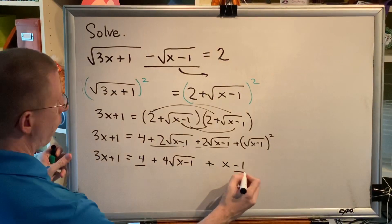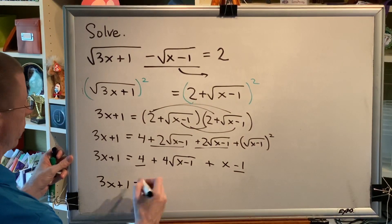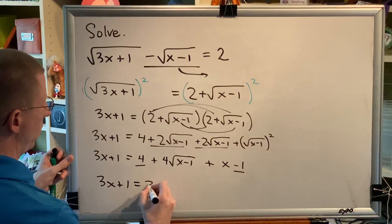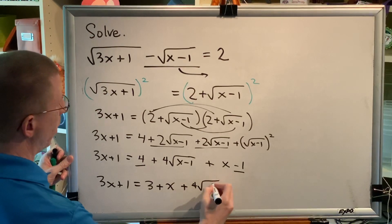Combining like terms, the 4 and the minus 1. So I get 3x plus 1 equals, 4 minus 1 is 3, plus x plus 4 radical, x minus 1.